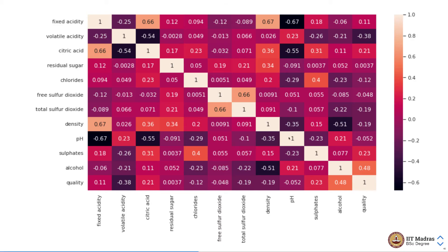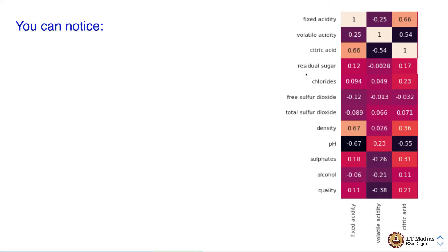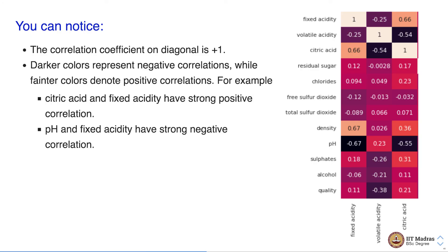As we move towards a correlation of one, the color becomes lighter and lighter, and as we move towards lower correlation, the color becomes darker. In this way you can quickly spot strongly positively correlated features as well as negatively correlated features. The correlation coefficient on the diagonal is one. Darker colors represent negative correlations while lighter colors denote positive correlations. For example, citric acid and fixed acidity have a strong positive correlation of 0.66, while pH and fixed acidity have a strong negative correlation of minus 0.67.